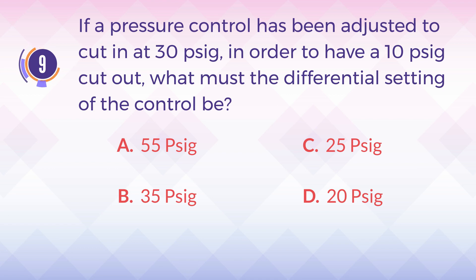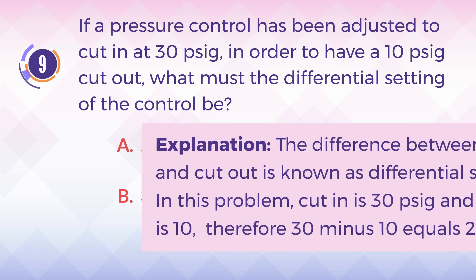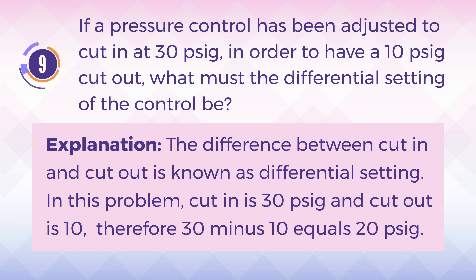The answer is D, 20 PSIG. The difference between cut in and cut out is known as the differential setting. In this problem, cut in is 30 PSIG and cut out is 10, therefore 30 minus 10 equals 20 PSIG.